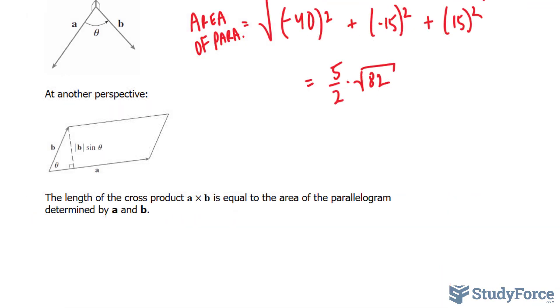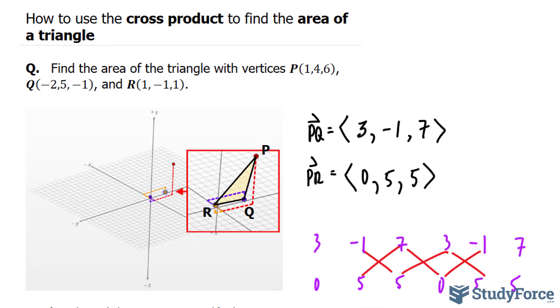So as a conclusion, the length of the cross product A times B is equal to the area of the parallelogram determined by A and B. There you have it. That is how to use the cross product to find the area of a triangle.